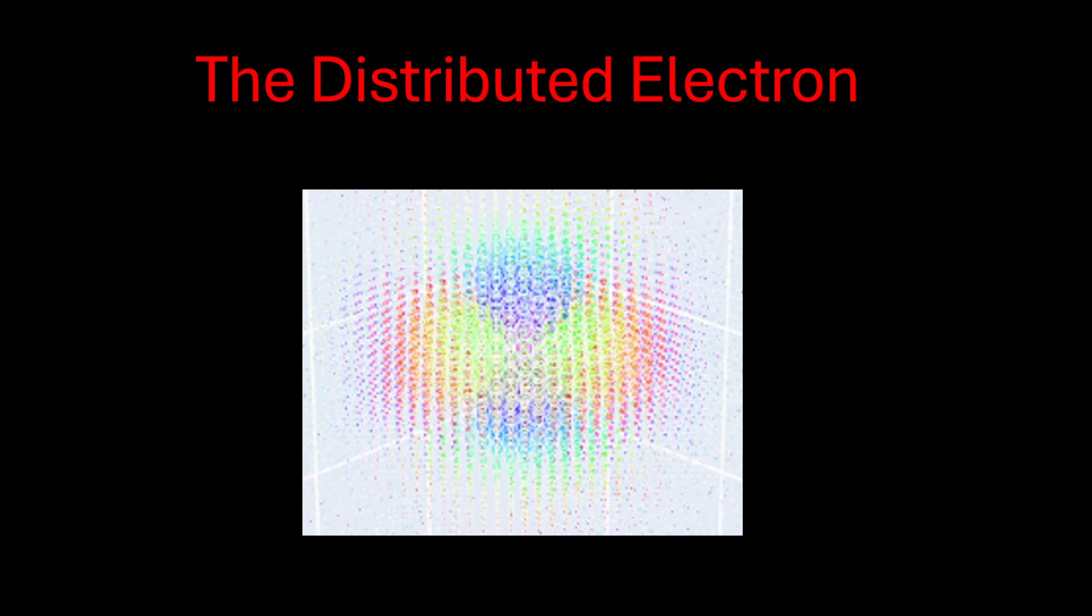Hi and welcome to this taster video on the distributed electron. The full theory is developed in other videos. Here I just want to quickly pull out one particular aspect: how spin can be accommodated into quantum mechanics without the need to make it weird or intrinsic.